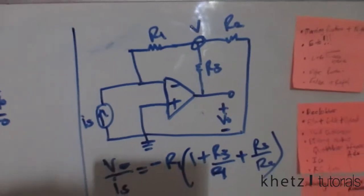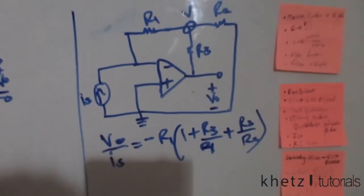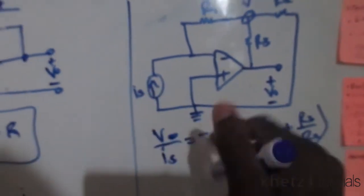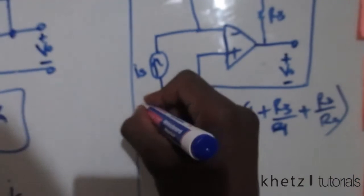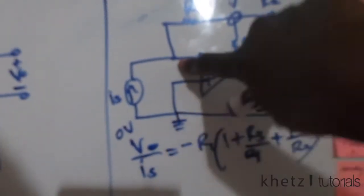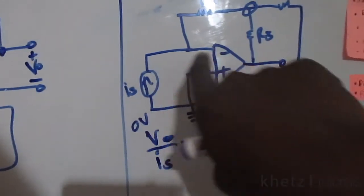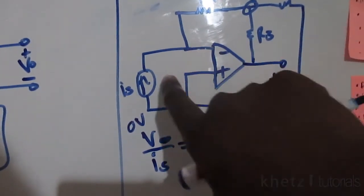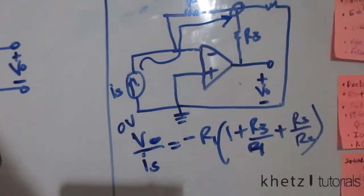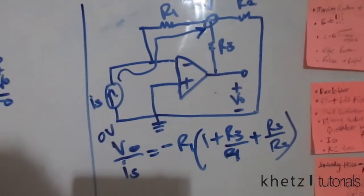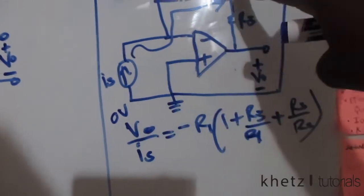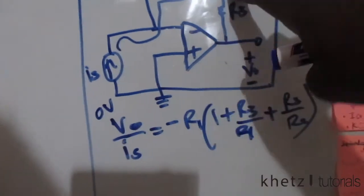Moving on to this circuit — it looks quite complicated, but the same principles apply. The bottom node here is ground, which is zero volts. From zero volts to this section here we have current is, but there isn't any current going into the op-amp terminal, which means this current goes all the way to that node.